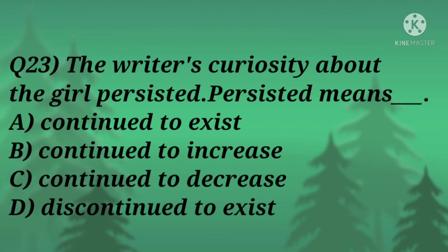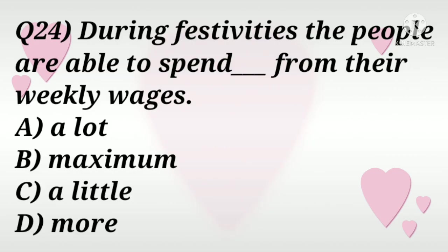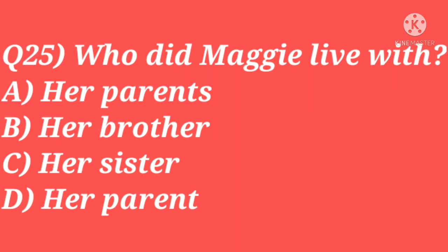Question 24: During festivities, the people are able to spend — a lot, maximum, a little, or more — from their weekly wages? The correct answer is a little. Question 25: Who did Maggie live with — her parents, her brother, her sister, or her parent? Two options seem correct, but since her father was dead, she lived with one parent, so the answer is 'her parent' — option D.